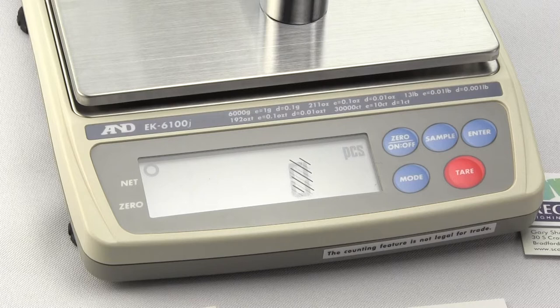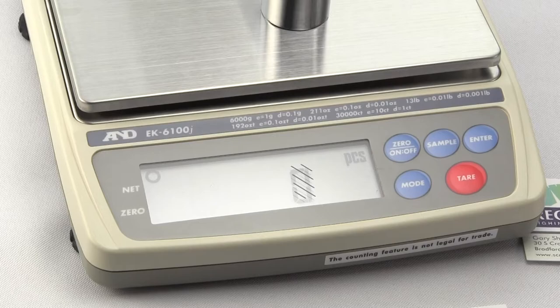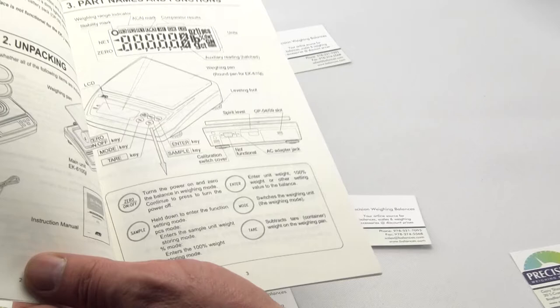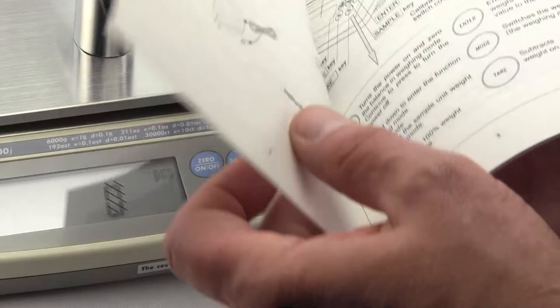If we open up the user manual right here on page 3, A&D does an excellent job explaining all of the key functions. So these five keys control everything for the setup. In the manual it's very clear, easy to read.